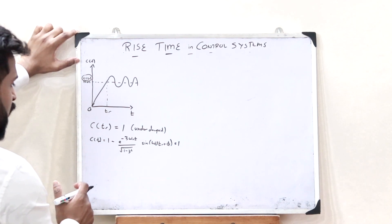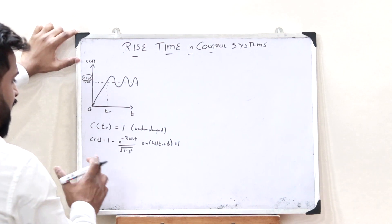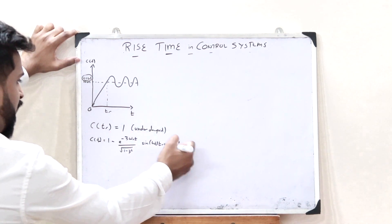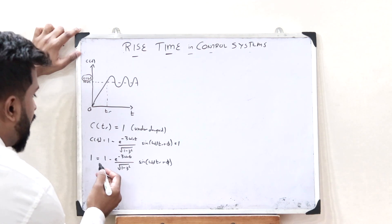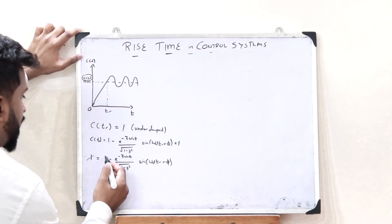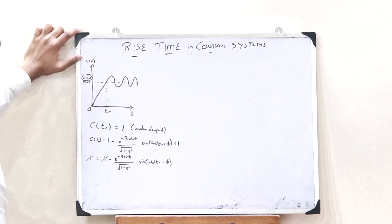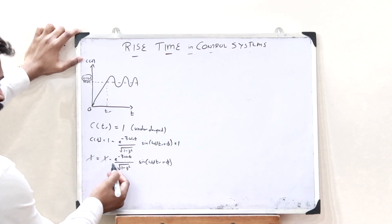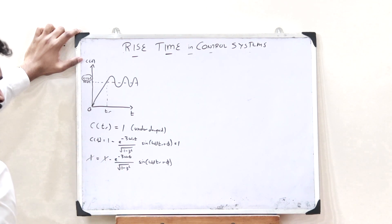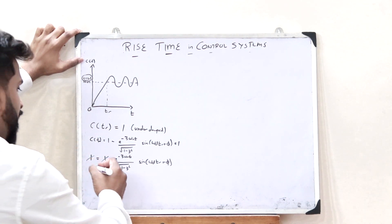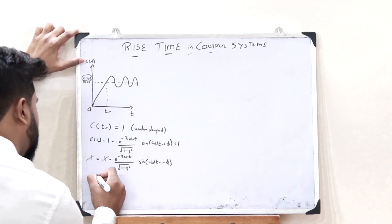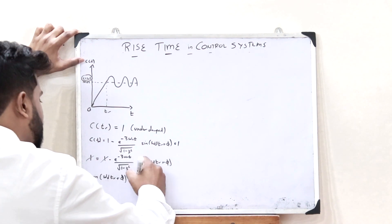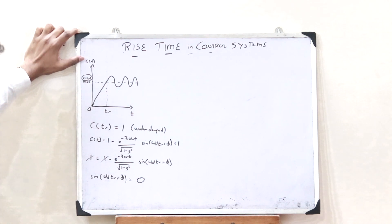We know that the time response of an underdamped control system is given by the equation C(T) = 1 − e^(−ζω_n T) / √(1 − ζ²) · sin(ω_D T_R + φ). Now if C(T_R) = 1, then the 1s cancel, this entire term gets cancelled, and we get sin(ω_D T_R + φ) = 0.